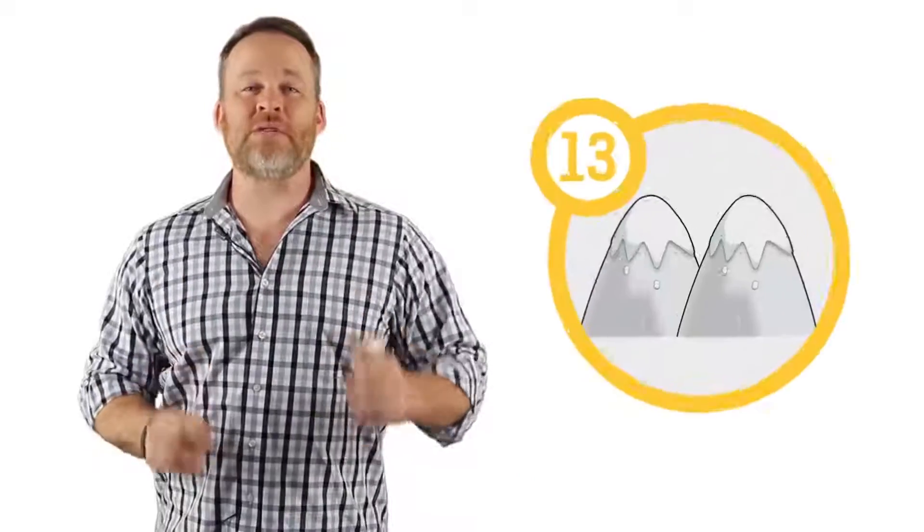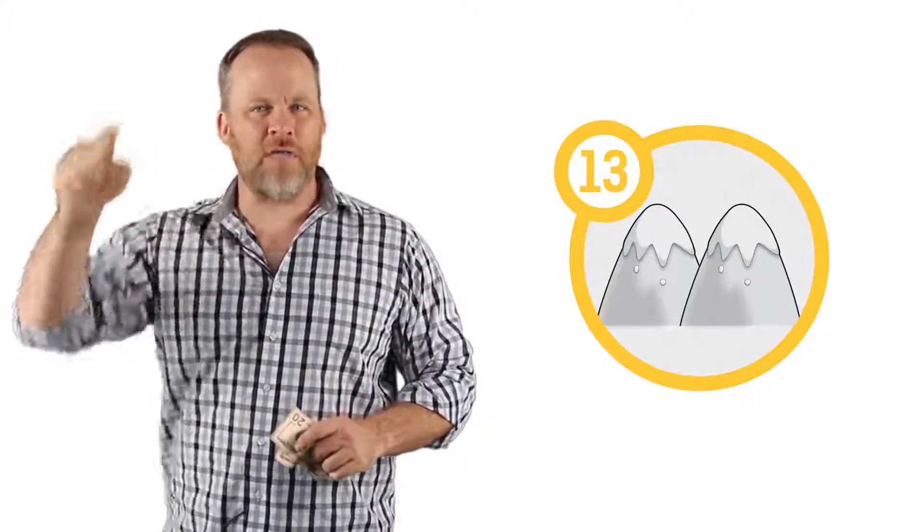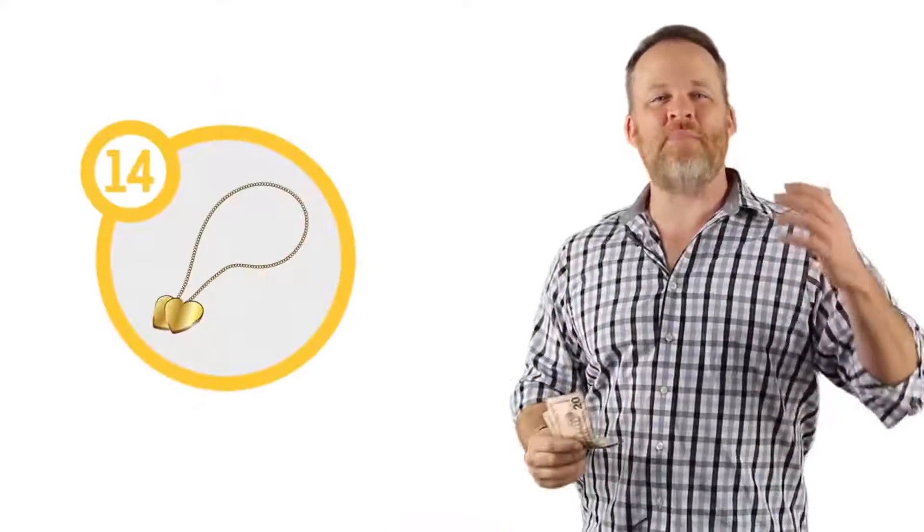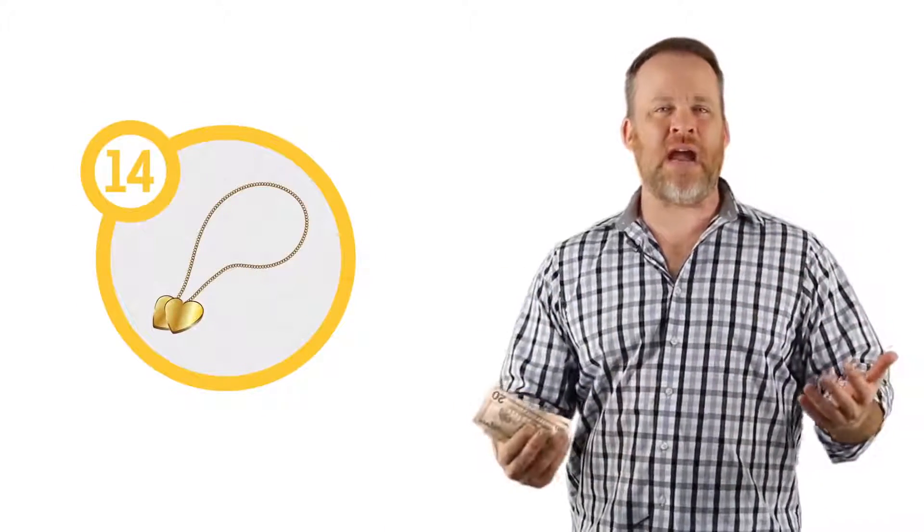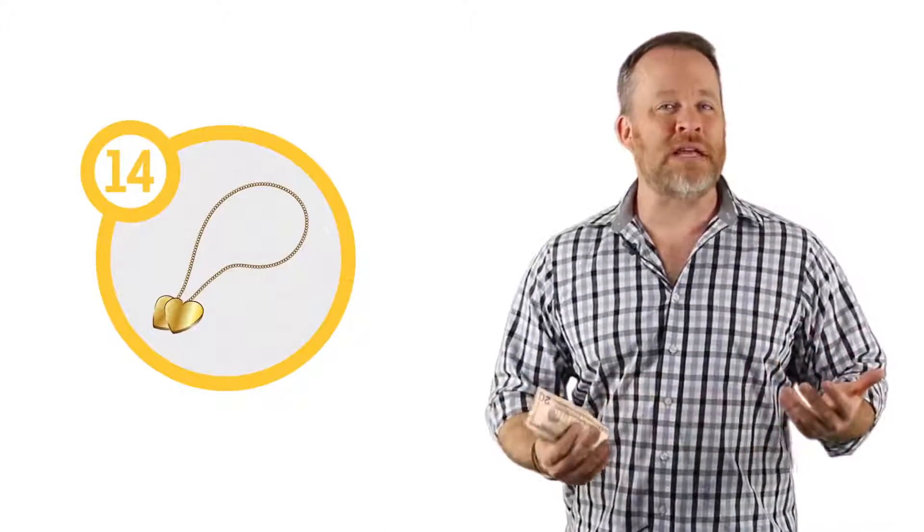Eleven was a goal post because a goal post has two sides on it. Twelve was eggs because a dozen eggs. Thirteen was a mountain because the curves of a three if you lay it on its side kind of look like the curves of mountaintops. Fourteen I made a necklace, 14 karat gold, maybe February 14th you give a necklace for Valentine's Day. Number fifteen I turned into a picture of drums because the five kind of looks like drums with the symbol above it and the one looks like the drumstick. So fifteen was drums.